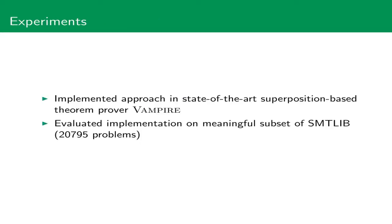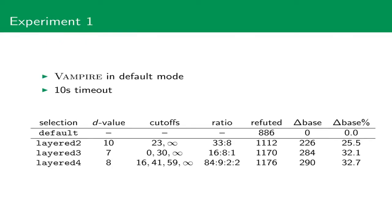We implemented our approach in the state-of-the-art superposition-based theorem prover Vampire, and evaluated our implementation on a subset of SMTlib consisting of over 20,000 problems. As first experiment, we ran Vampire in the default mode with a 10-second timeout. We compared the default clause selection heuristic with instantiations of our framework having two, three, or four groups. For each of these instantiations, we optimized the d-value, the cut-offs, and the ratio. When we look at the results, we see that even a two-group setup improves over the default strategy by solving 25% more problems. We can also see that if we increased the number of groups, we further improve the overall number of solved benchmarks.